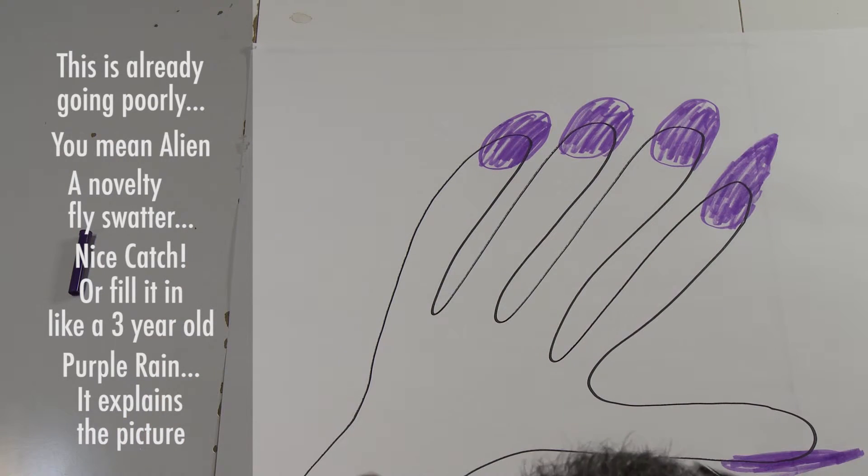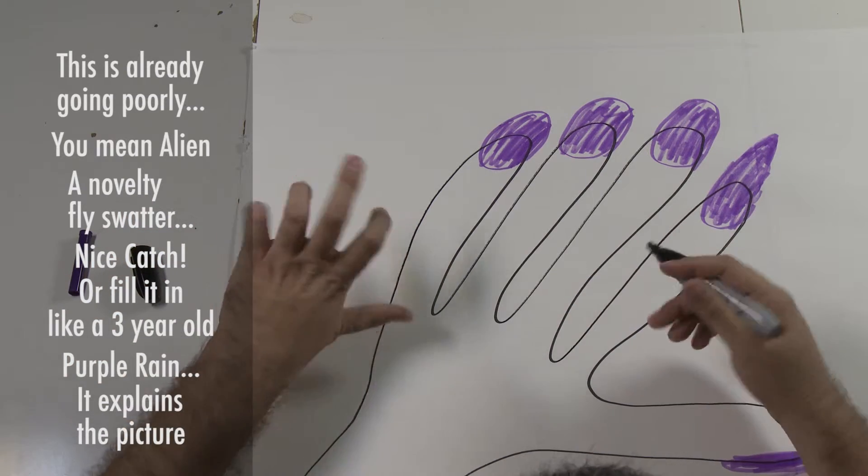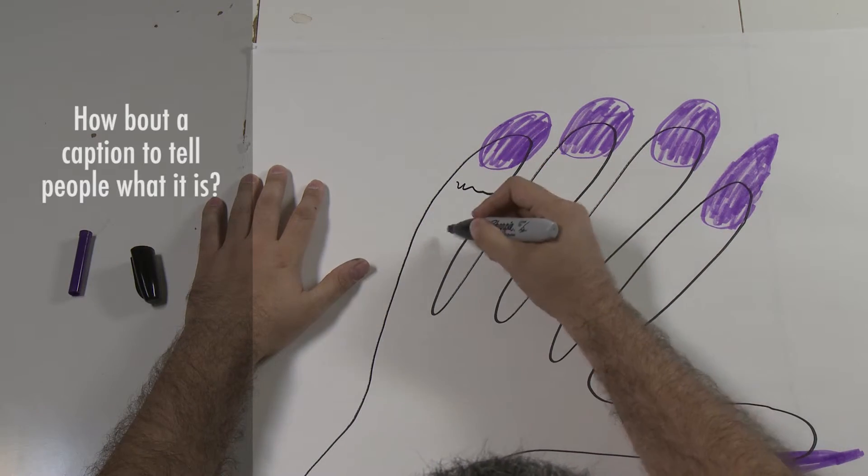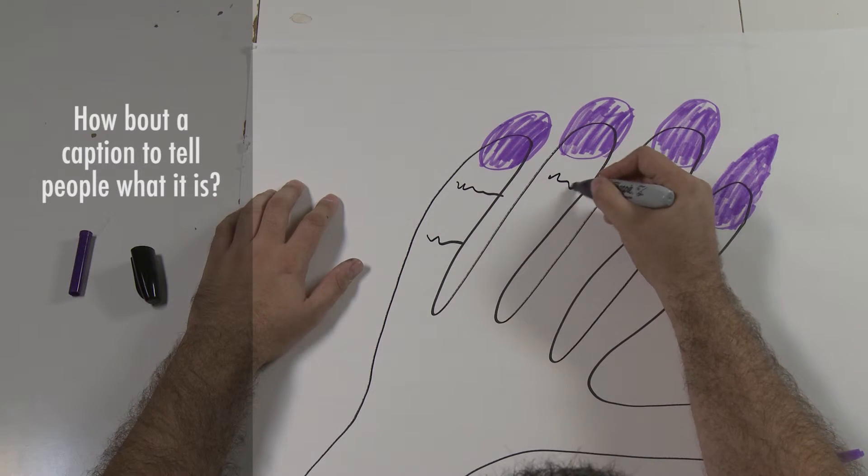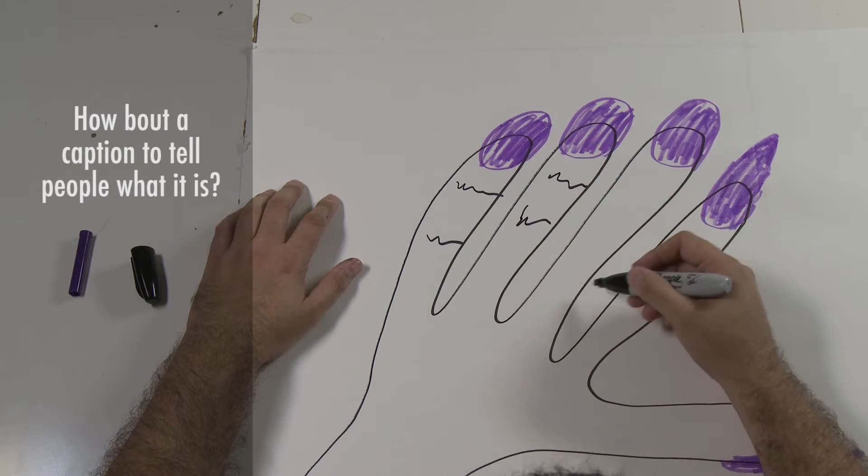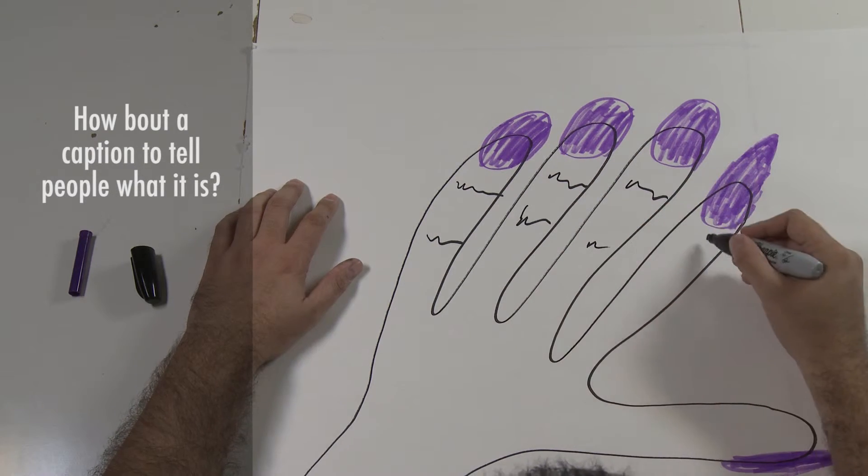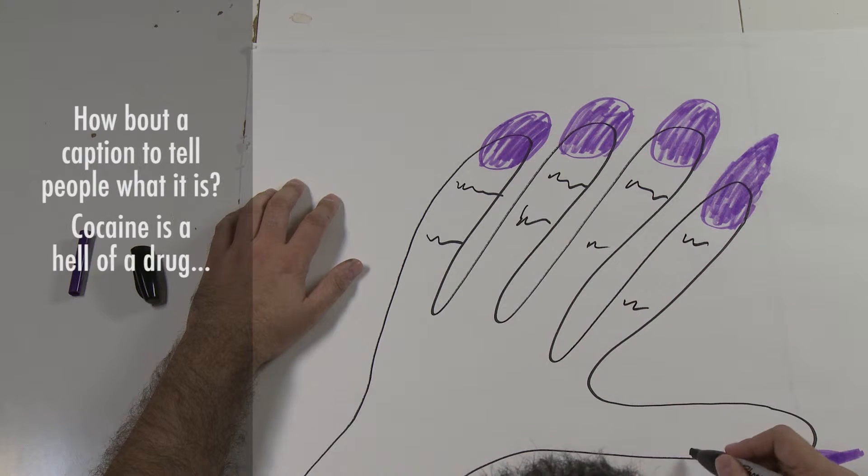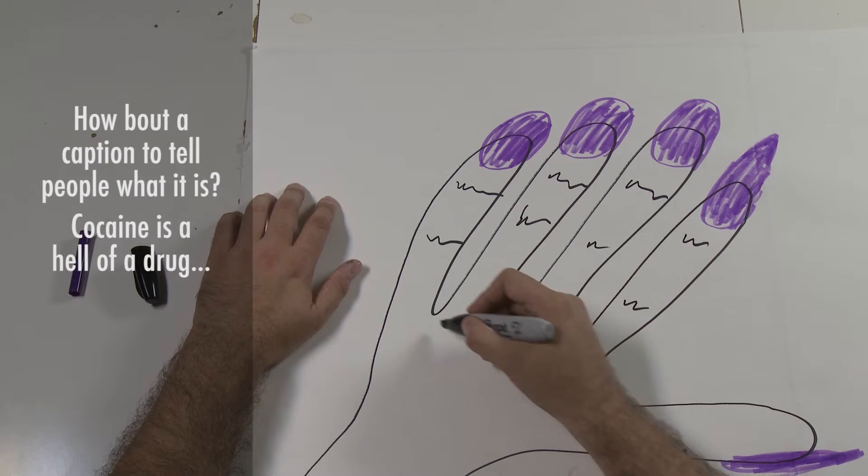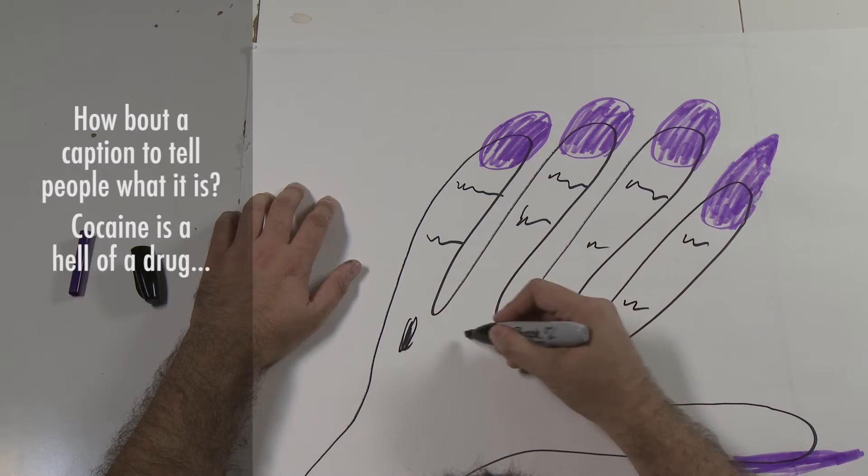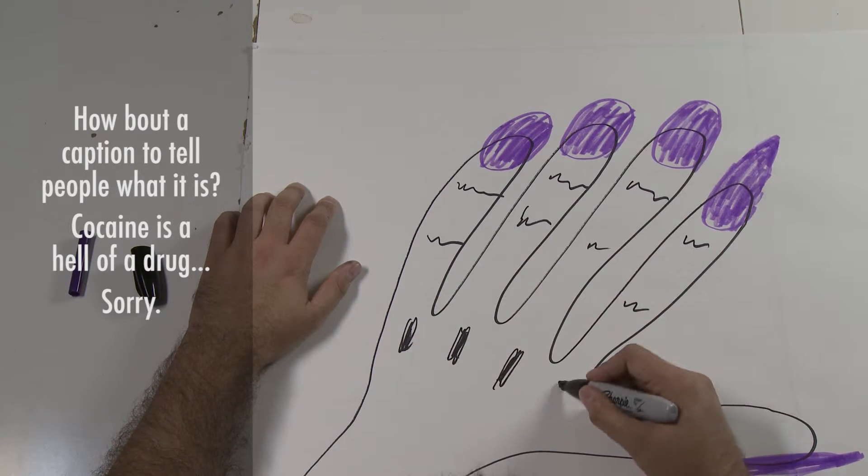And at this point, we want to add in some more detail for the knuckles and the bends in fingers. So just a little bit here, a little here, a little here, and here. And then the knuckles are kind of shaded. So just throw some shading in there.